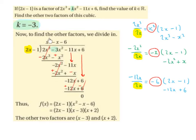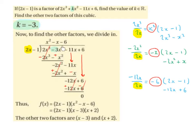So x squared goes on top of the bus stop. Then we multiply x squared by 2x minus 1: x squared by 2x is 2x cubed, and x squared by minus 1 is minus x squared. We write this underneath the bus stop and change the signs. So our 2x cubed will cancel out, and minus 3x squared plus x squared gives minus 2x squared.